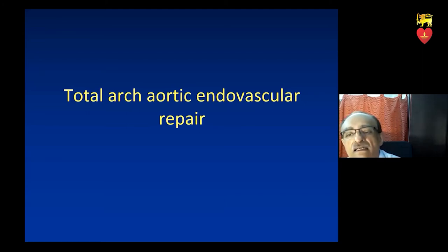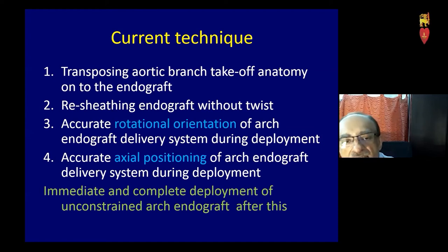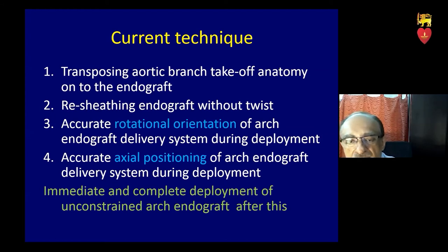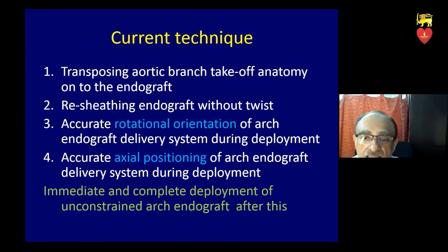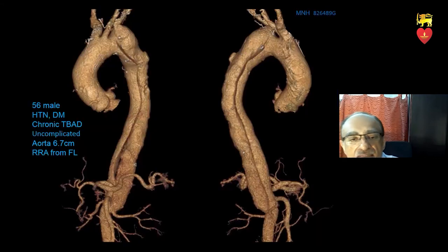We will now go to total endovascular repair of the aortic arch. We have made our own technique with four important components. One is to transpose the anatomy of the aortic arch branches onto an endograft. Second is to resheathe that endograft without any twisting. Third is to deploy it with rotational orientation accuracy, so the fenestrations are oriented at the right angles. Fourth is axial positioning accuracy, so they don't go too far in or too far back. Once correct position is achieved, you completely deploy the graft in one go.